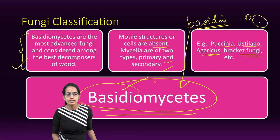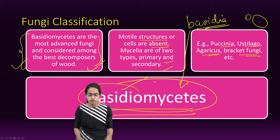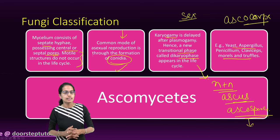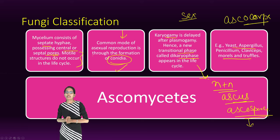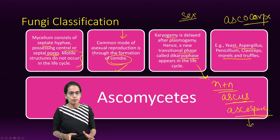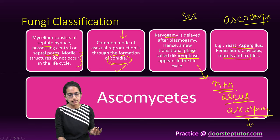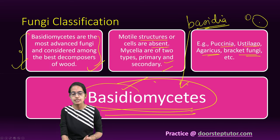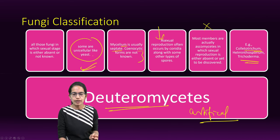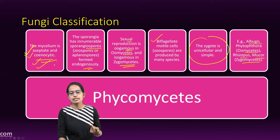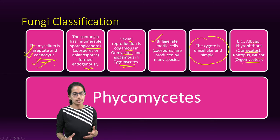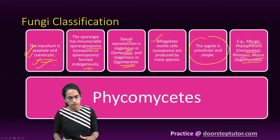Basidiomycetes is the most advanced fungi and the best decomposer of wood. Ascomycetes is where the most common form of reproduction is asexual through conidia and formation of ascocarps. As a quick summary: for Ascomycetes, the best examples are yeast and Aspergillus; for Basidiomycetes, Puccinia and bracket fungi; for Deuteromycetes, Trichoderma; for Phycomycetes, Rhizopus and Mucor; and slime molds are the classic example of false fungi. This classification was given under Martin's Classification of 1961 and is extremely important.